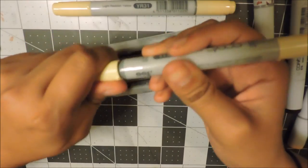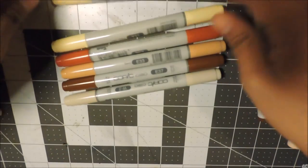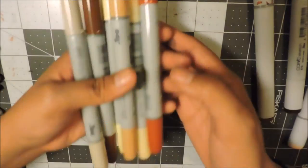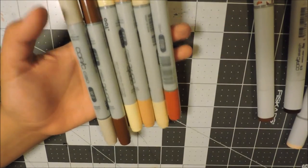The Copic Sketch comes with a brush nib on one side and a chisel tip on the other. I'll be putting the name and number of each Copic marker in the description down below.